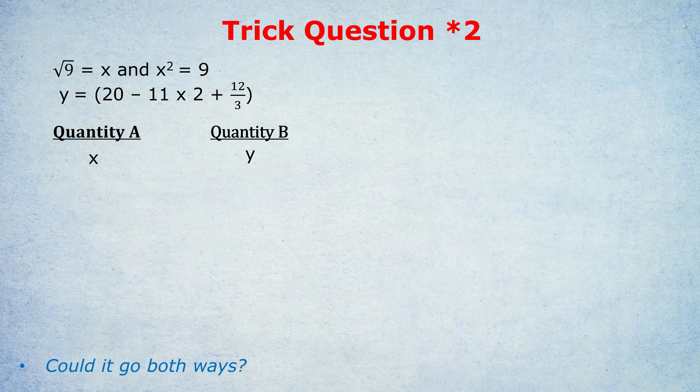Trick question number 2. Square root of 9 is x, and x squared is 9. y equals 20 minus 11 times 2 plus 12 over 3. Which is bigger, x or y? Pause the video if you want to try the question before I tell you the trick.